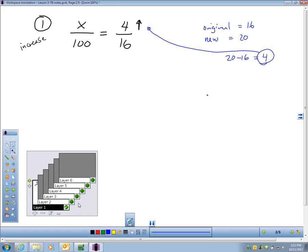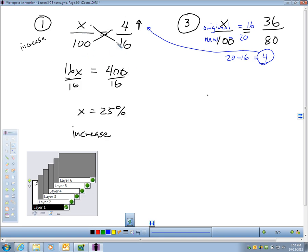There's a proportion. All I need to do now is cross-multiply, use cross-products, 16x equals 400, divide each side by 16, and I'm finding out that 400 over 16 is 25. And remember, these were percentages, I'm showing you that we had a 25% increase. I hope that made sense.